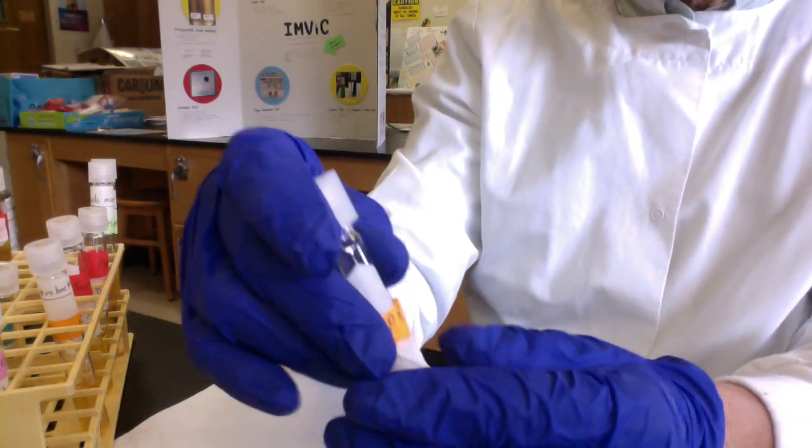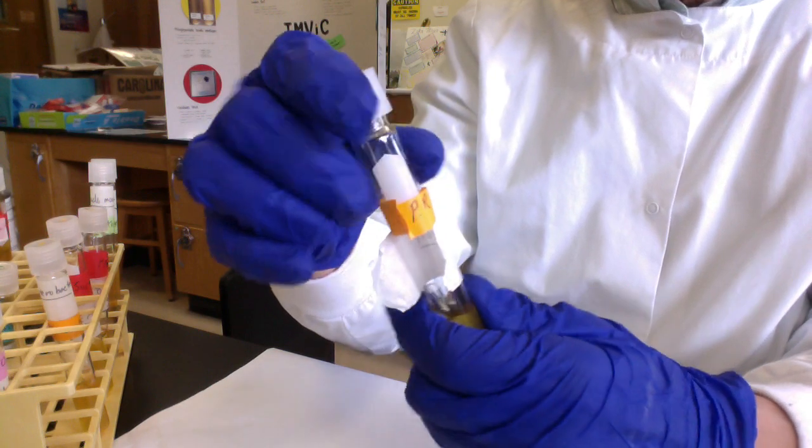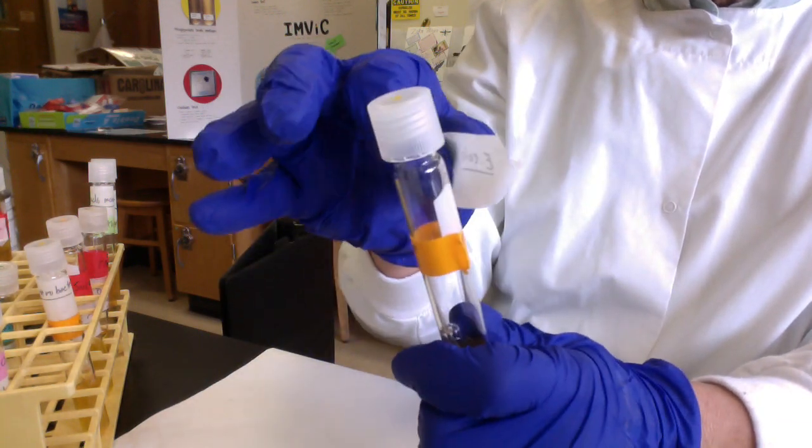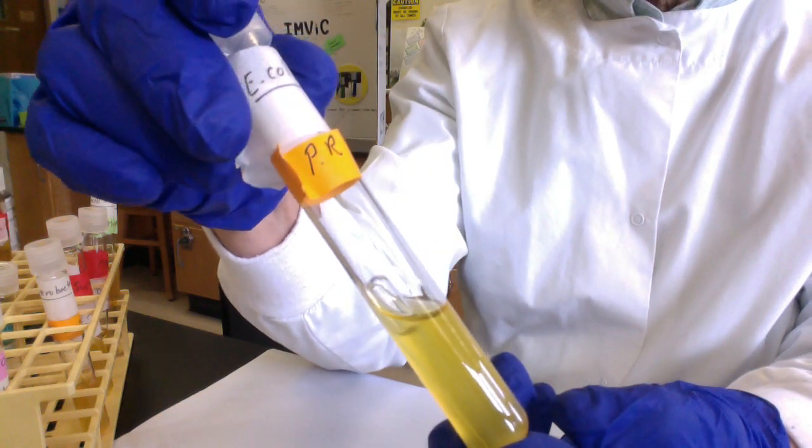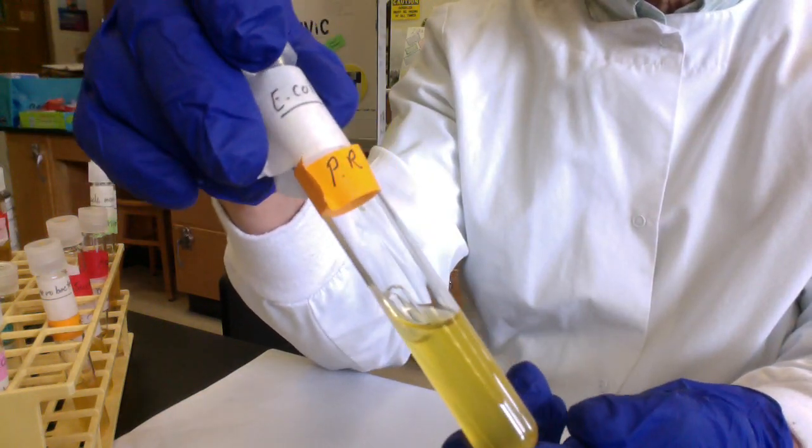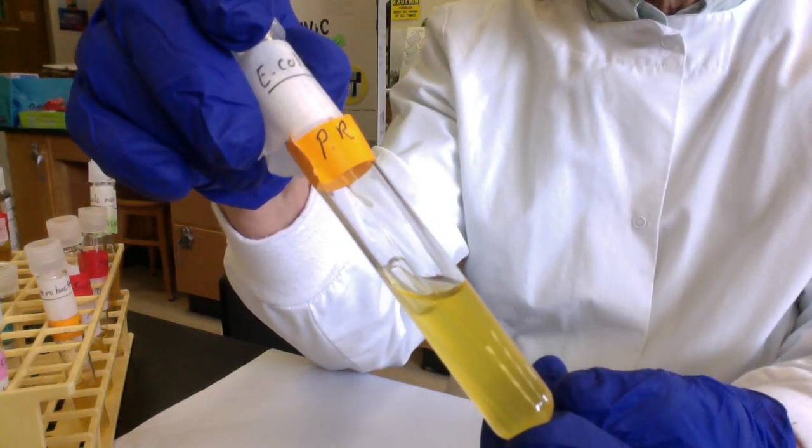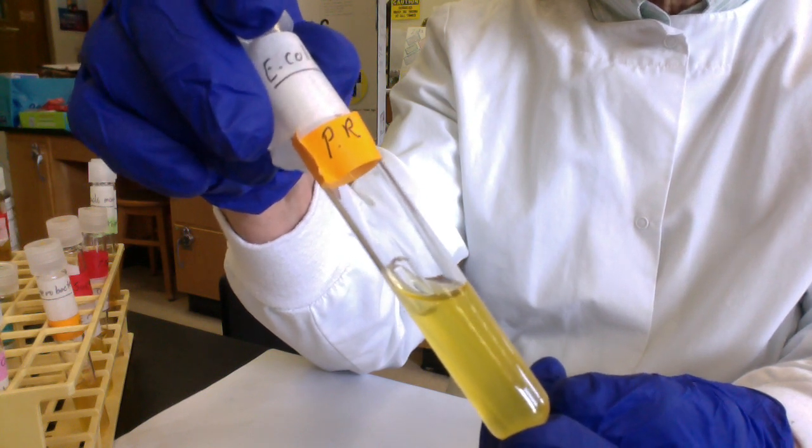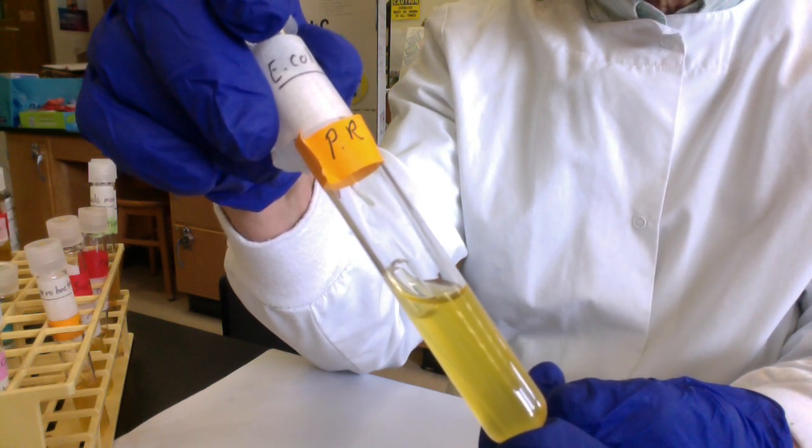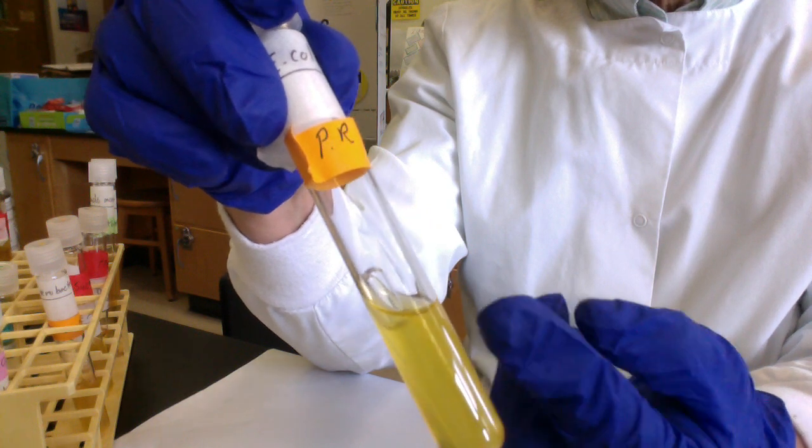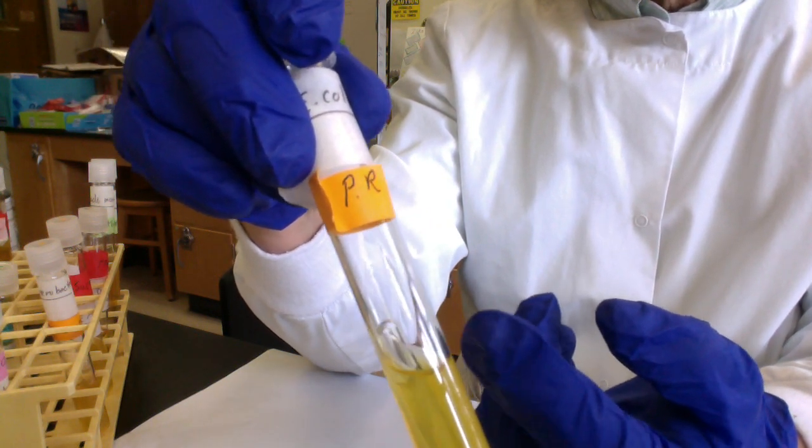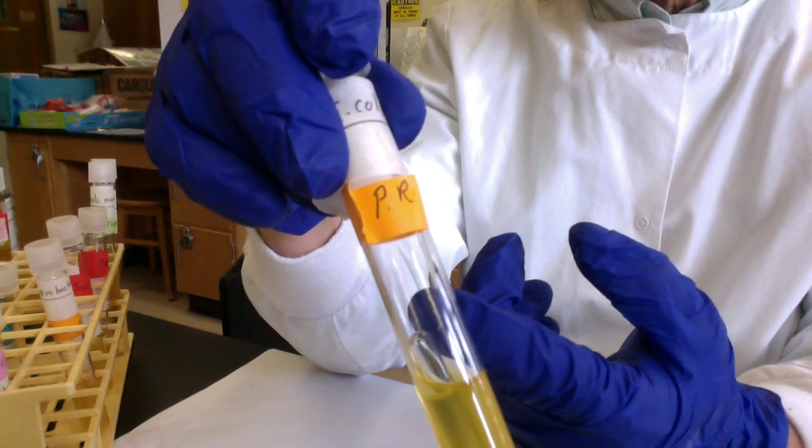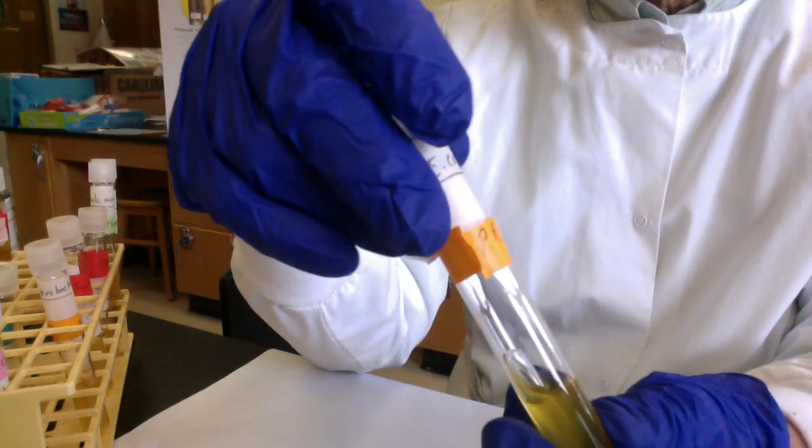This is PR lactose with E. coli. We can see that E. coli must make beta-galactosidase because it fermented lactose. To ferment lactose, you have to make beta-galactosidase. The results are the same as for glucose: A/+ for acid and gas produced during fermentation.